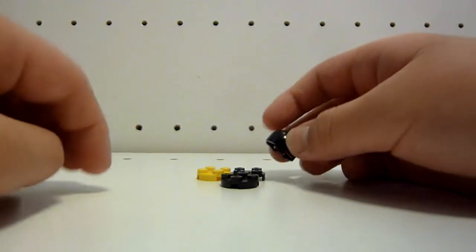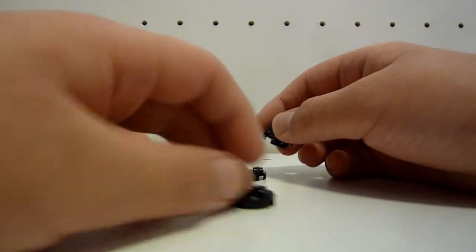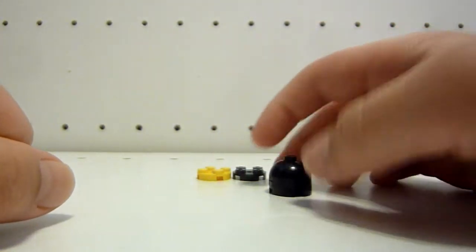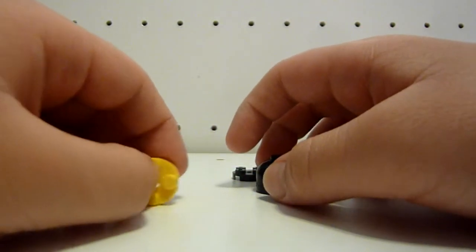And then you take one of the domes, and then you put a two by two round piece, and you put the dome on top of the two by two round piece. Like that.